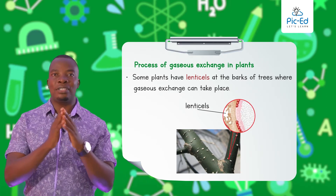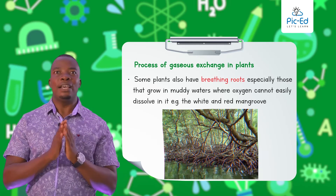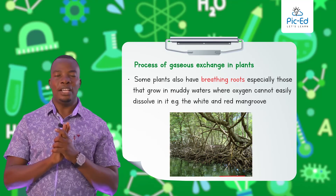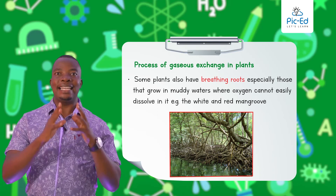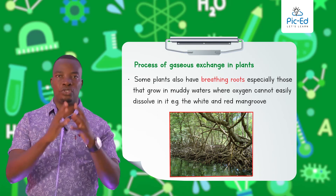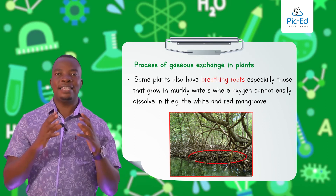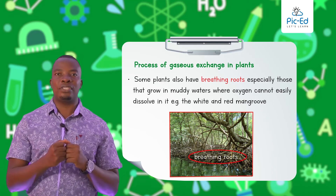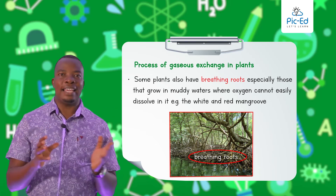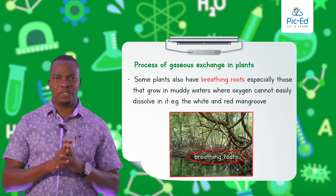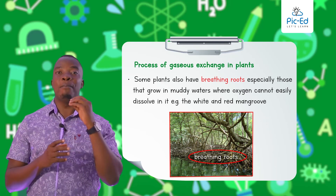There are some other plants which grow in mud and muddy waters, where obtaining oxygen is very difficult. These plants develop breathing roots. For example, the white and the red mangroves. These breathing roots are aerial roots that come above the ground to extract oxygen from the surrounding water atmosphere, majorly from the humidity around, because they obtain it in the form of moisture.